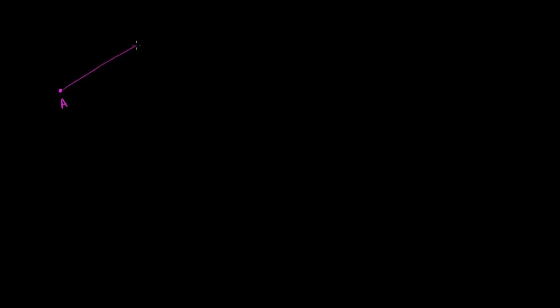Let's start off with segment AB. So that's point A, and this is point B right over here. And let's set up a perpendicular bisector of this segment. It will be both perpendicular, and it will split the segment in two. We could call that line L. That's going to be a perpendicular bisector.